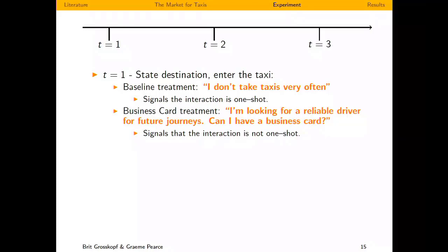The business card treatment — which we used to call 'reputation,' now we call it 'business card' — signals a potential future interaction. The baseline statement signals a one-shot interaction. In the baseline, testers say 'I don't take taxis very often'; in the business card treatment, 'I'm looking for a reliable driver.' Both statements are made right when entering the cab, after stating the destination.